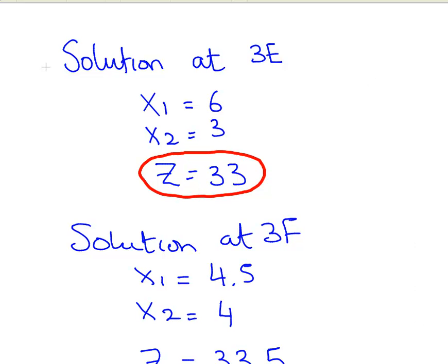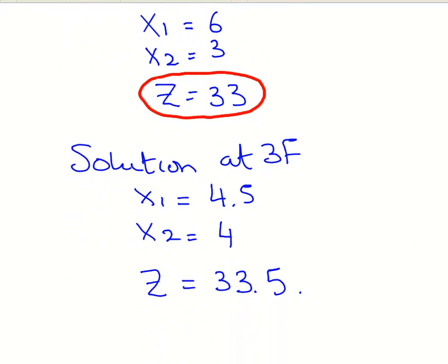And likewise, the solution at 3F would have been 4.5 and 4. The realization there of the objective function is 33.5. Now, this is important. We could keep branching on this, but there is no reason to. Let's just check it here.